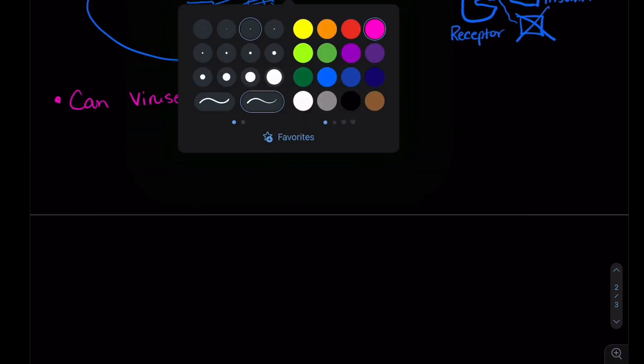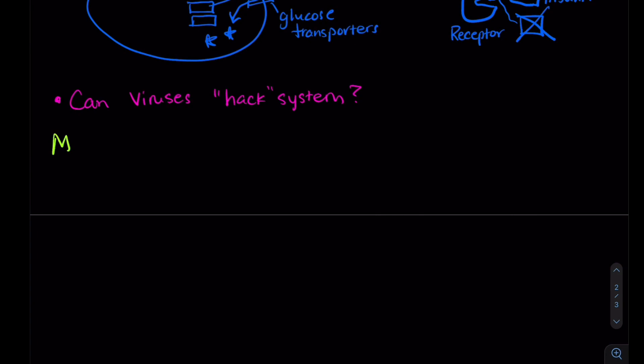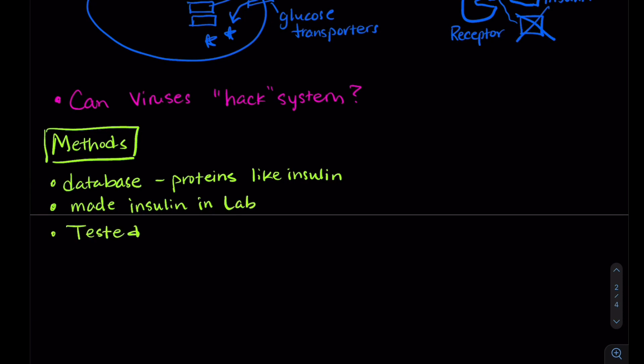So what they did, now we're on to our methods, what they did was they looked in a database of viral genomic information and they were looking for proteins that were like insulin in their sequence. And then once they found some, they actually made that insulin in the lab and then they tested it to see how well it worked.